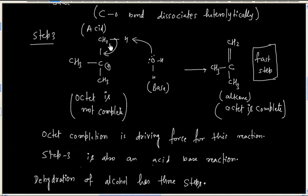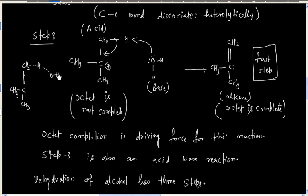In transition state 3, an oxygen-hydrogen bond is being formed, the carbon-carbon double bond is being formed, and a carbon-hydrogen bond is being broken. Carbon will have a delta-plus charge and oxygen will have a delta-plus charge. This is transition state 3.